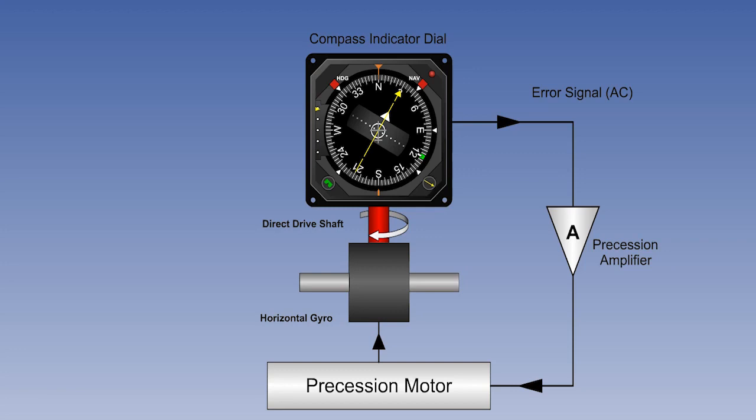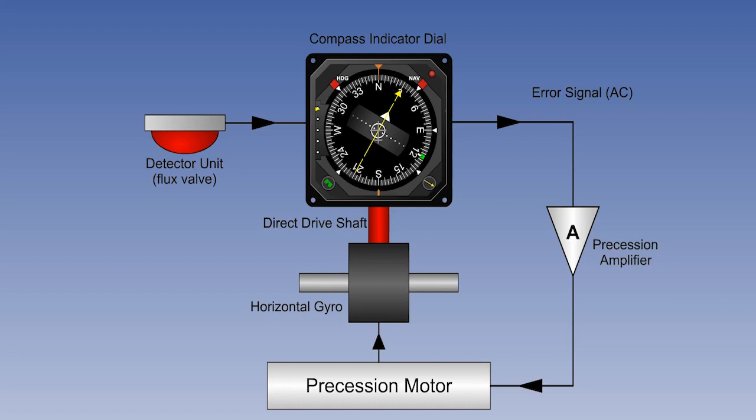We now have a system in which, if the gyro drifts away from the steady flux valve heading, it is brought back again by the precession amplifier and motor. We have explained the normal operation in terms of the gyro, which has a tendency to drift, being slaved to the magnetic detector unit.